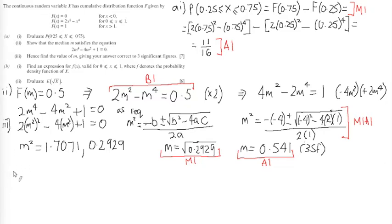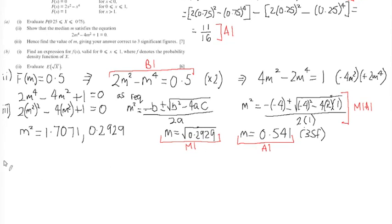Moving on to part B. Let's just give myself a little bit of space here. So in part B, we're asked to find an expression for f(x) valid for 0 less than or equal to x less than or equal to 1 where f denotes the probability density function of x. So little f of x is equal to the result when I differentiate big F of x.